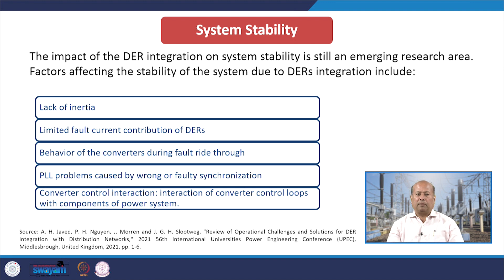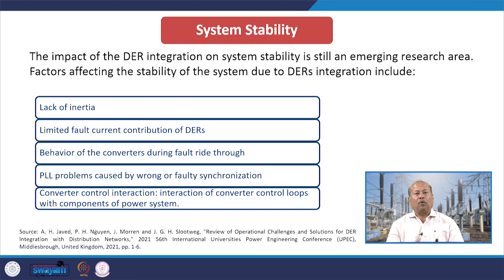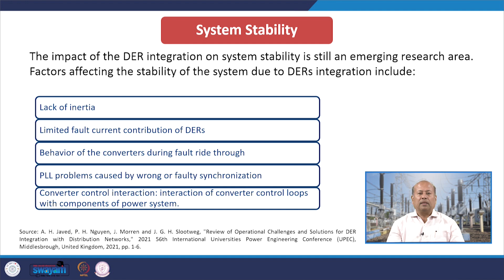Let us focus on system stability. The impact of DER integration on system stability is still an emerging research area. Factors affecting stability include lack of inertia — because rotational devices keep on reducing due to PV integration, so the inertia of the system is going to fall — limited fault current contribution of DERs, behaviour of converters during fault ride-through, PLL problems caused by wrong or faulty synchronization, and converter control interactions.